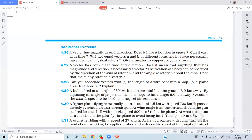The rotation of a rigid body can be specified by the direction of axis of rotation and the angle of rotation about the axis. Does that make any rotation a vector?